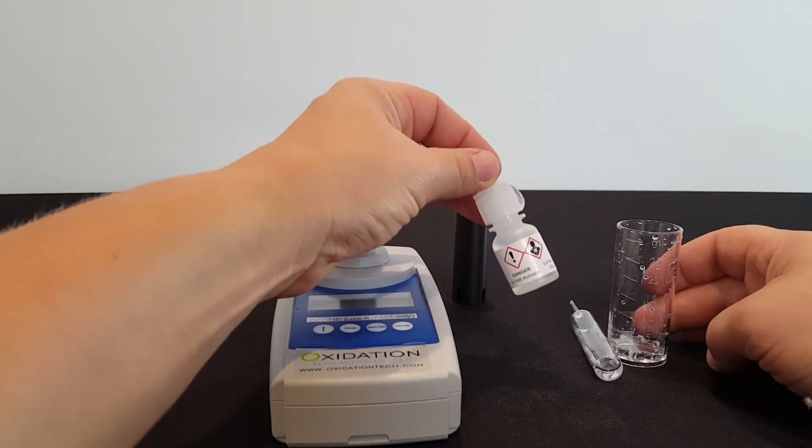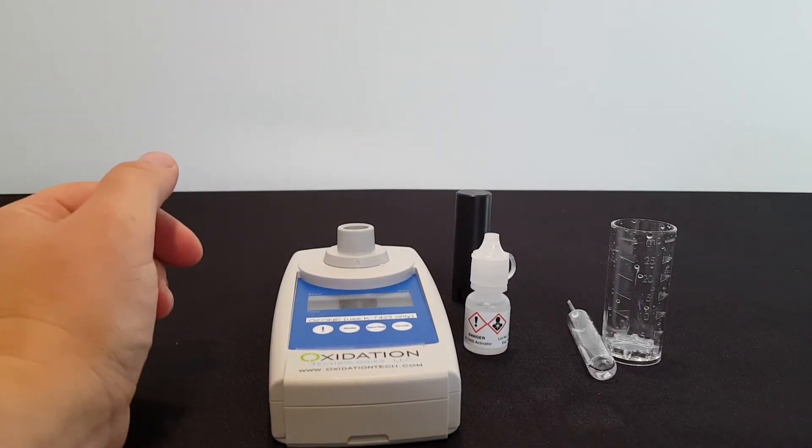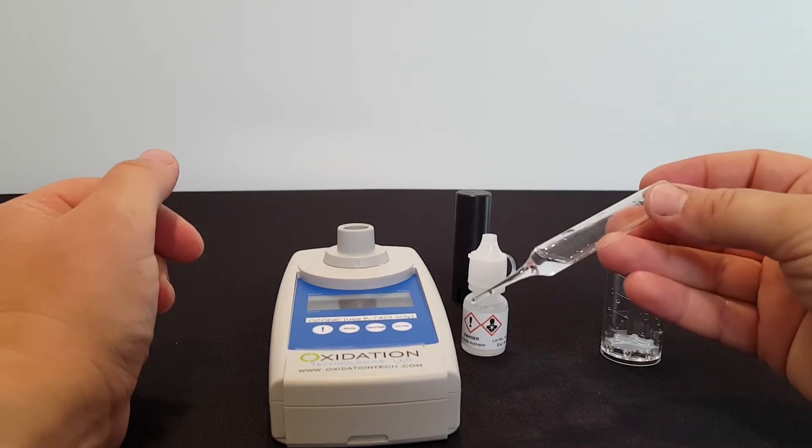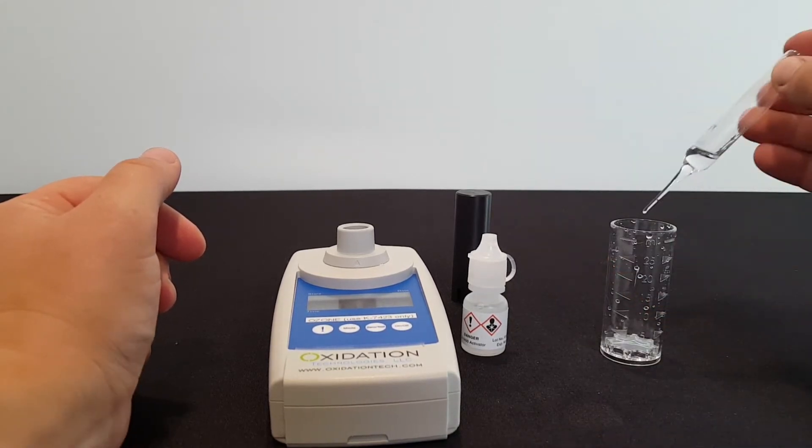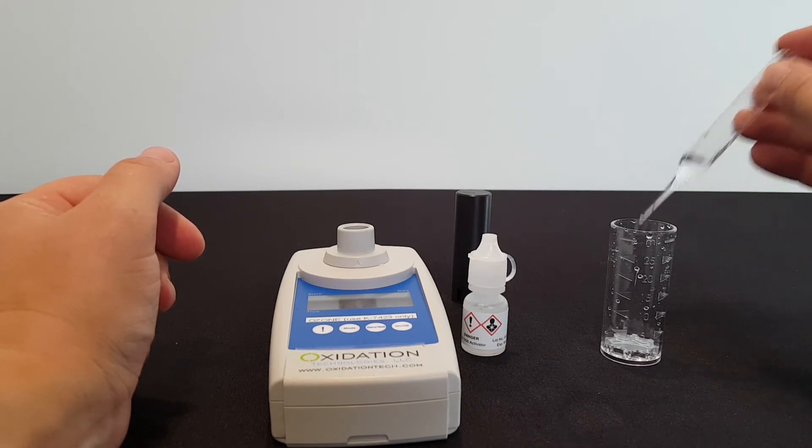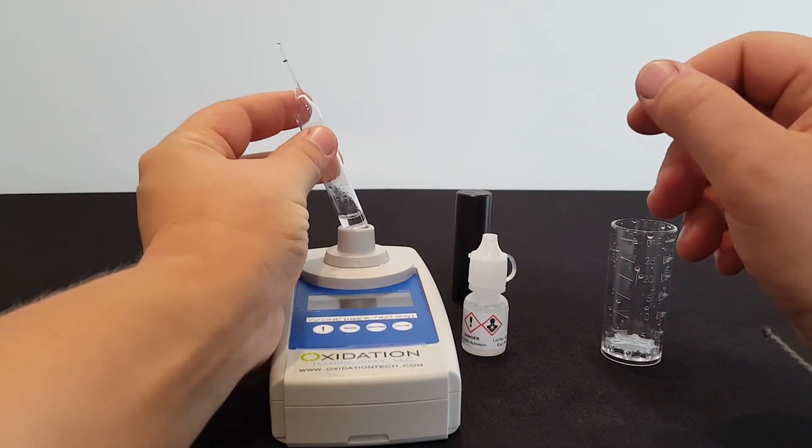So the first step is going to be putting five drops of activator solution in the test cup. The next step is going to be filling the test cup up to the 25 milliliter point, and then I am going to put this vacuum sealed ampoule inside the sample, snap the tip off. It will immediately fill with the sample, and then I'm going to put this in the meter and measure the ozone.